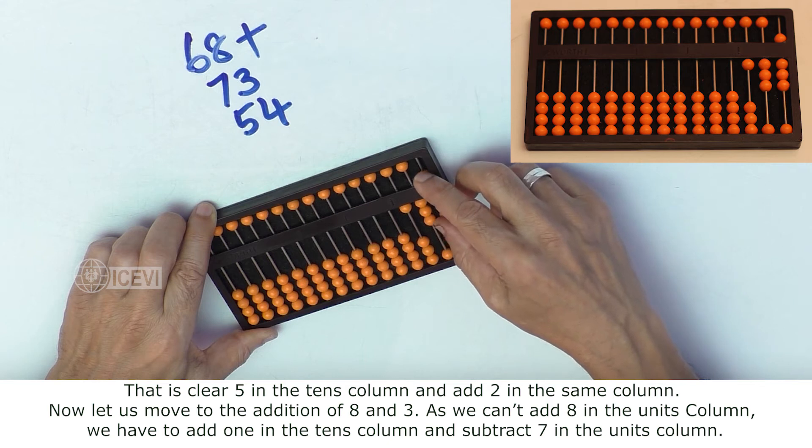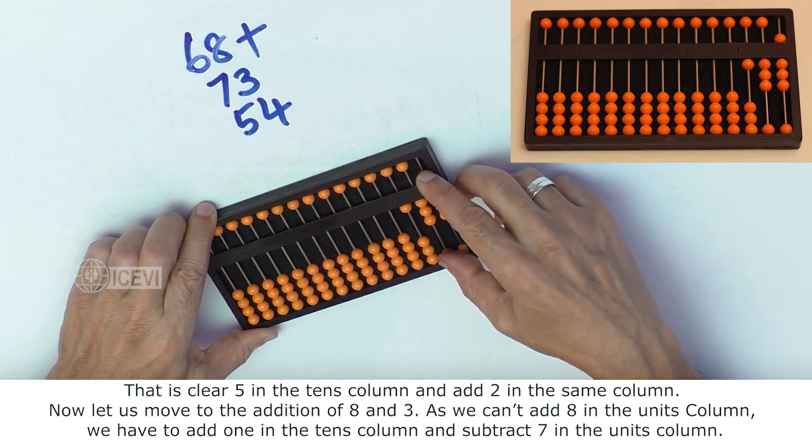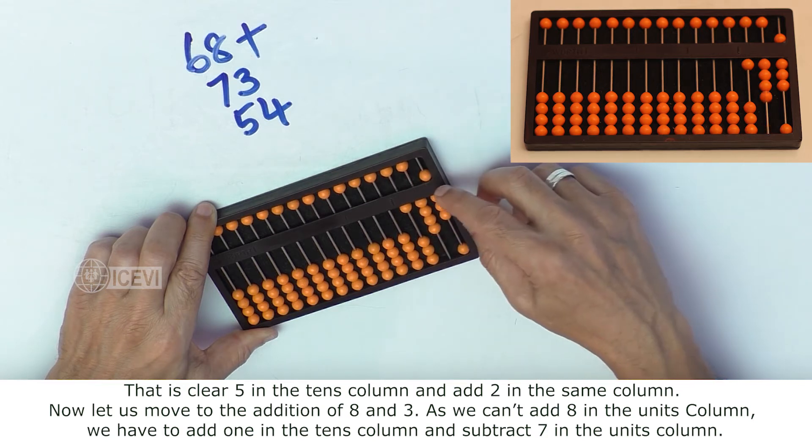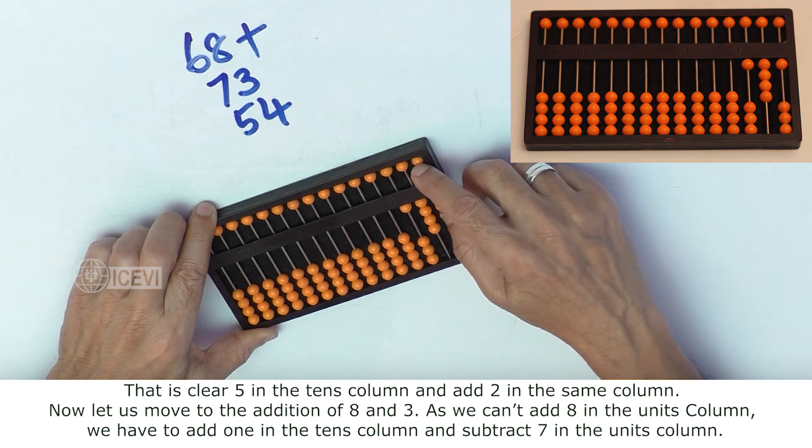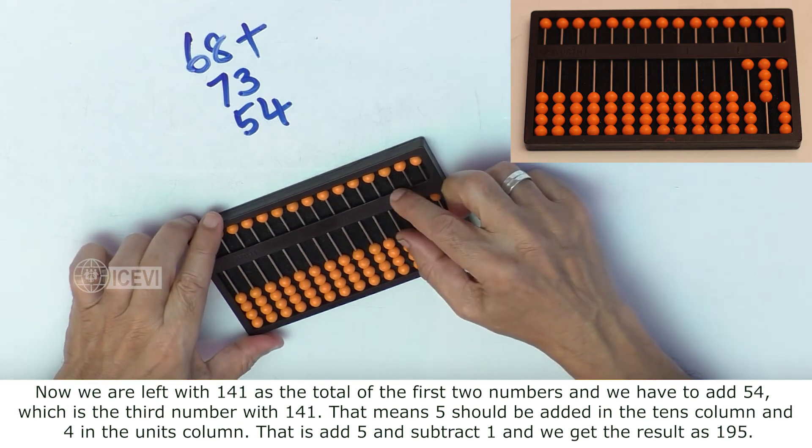Let us move to the units column where we have to add 3. We can't add 3 there, so we add 1 in the tens column and subtract 7 in the units column.